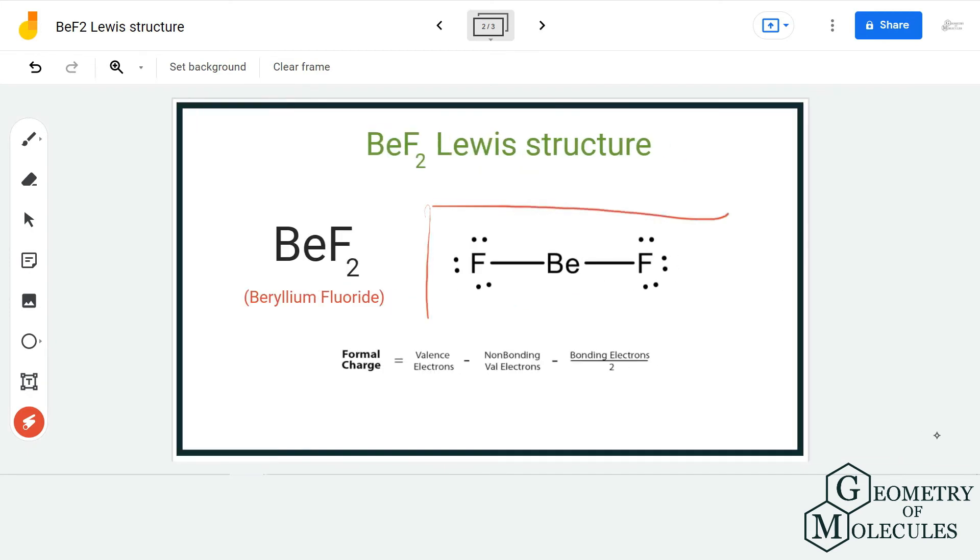By opting for this Lewis structure, we have formal charges of zero on all atoms. So if we calculate the formal charge for fluorine and beryllium atoms in this structure, the charges will be zero.